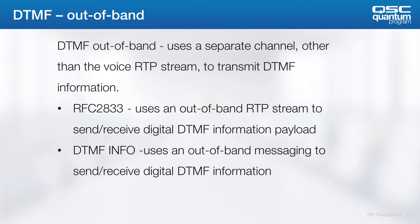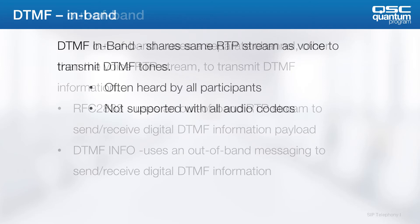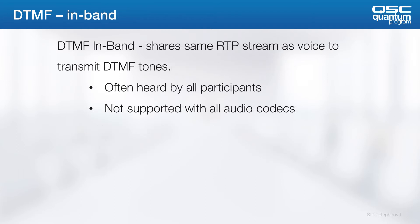RFC2833 is the SIP standard for sending DTMF, while DTMF info is old and not really used anymore. DTMF in-band shares the same RTP streams with the DTMF tones as voice, so it's often heard by all participants.